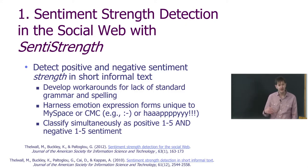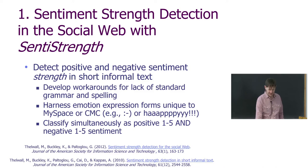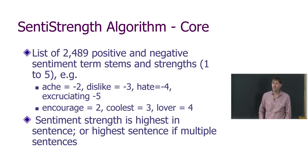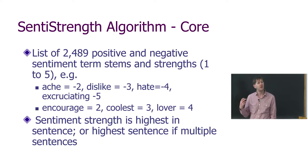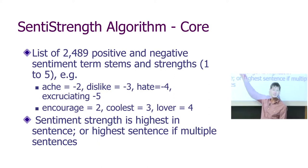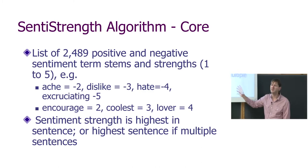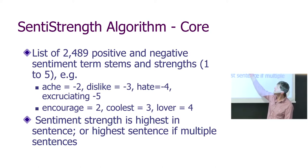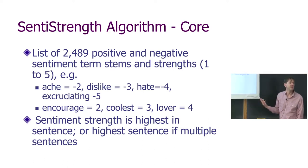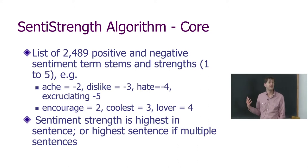The main version of SentiStrength is for English, but we have versions for other languages as well — Marina demonstrated Italian and Swedish. The core of the algorithm is a list of 2,489 positive words or word stems for the English version, and each word or word stem has a score on the positive or negative scale. For example, 'ache' is mildly negative, 'dislike' is more strongly negative, 'hate' is a strong negative word, and 'excruciating' has the biggest negative score: minus 5.